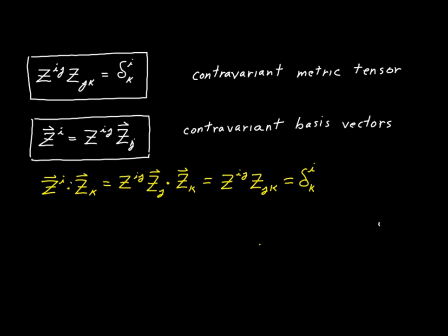These two vectors will be perpendicular in every case except when I is equal to K. When I is equal to K, the dot product has to be one. That means as one of them gets larger, the other has to get smaller because their product is always one. Therefore, we sometimes refer to these two vectors as being the reciprocal of each other.